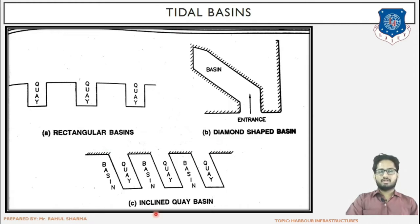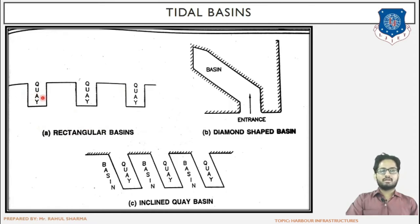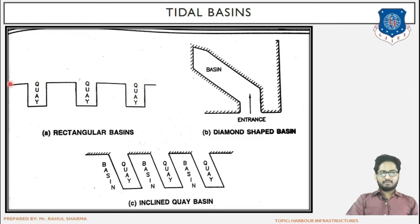There are three shape views for how a basin can be. First is the rectangular basin, where the basins are in the form of a rectangle. Adjacent to the basin, the loading and unloading platforms — called quays — have been shown. The shoreline is located at one end, with the loading and unloading platforms arranged perpendicularly.